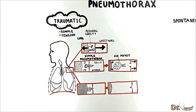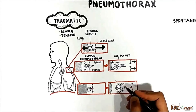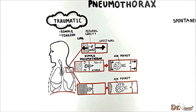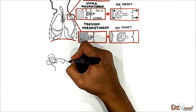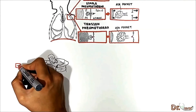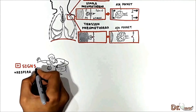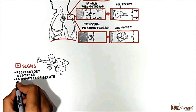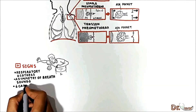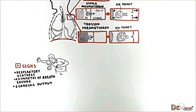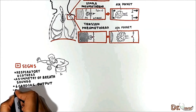As a consequence, a large air pocket develops between the chest wall and the lung. This type of pneumothorax is called tension pneumothorax. The common clinical signs of tension pneumothorax include respiratory distress, asymmetry of breath sounds, and decreased cardiac output due to positive thoracic pressure decreasing venous return.